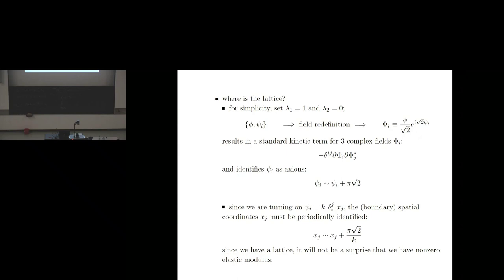At the special values lambda_1 = 1 and lambda_2 = 2, I can combine four scalar fields — three axion-like and the neutral scalar phi — into three complex fields with a standard kinetic term. Once you recognize that, you know these axions must be real axions, so they must be periodic. The periodicity of these axions, once I turn on a source term for them, immediately implies that my spatial coordinates are periodically identified. This is your lattice. Anything related to k is a source term that you do not want to change; otherwise you won't satisfy the first law of thermodynamics.